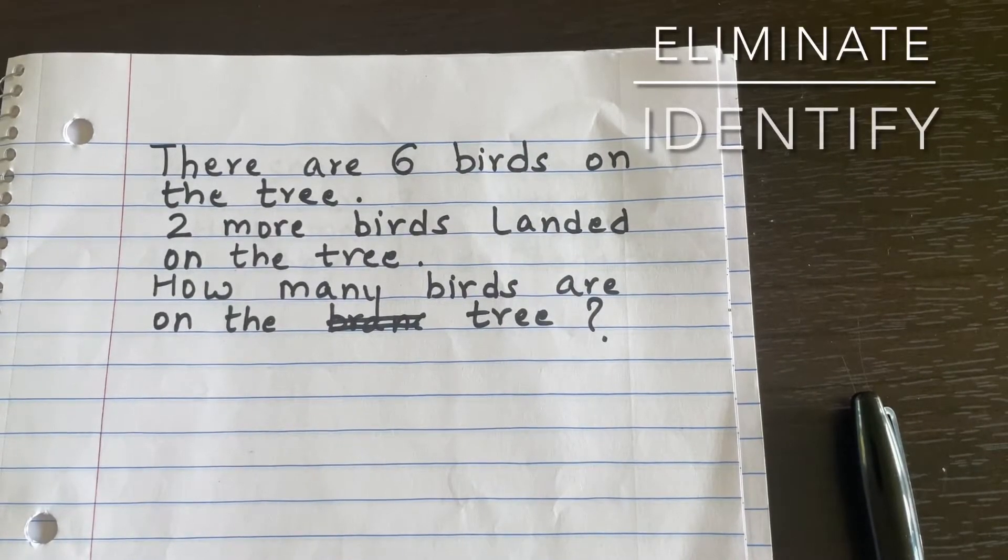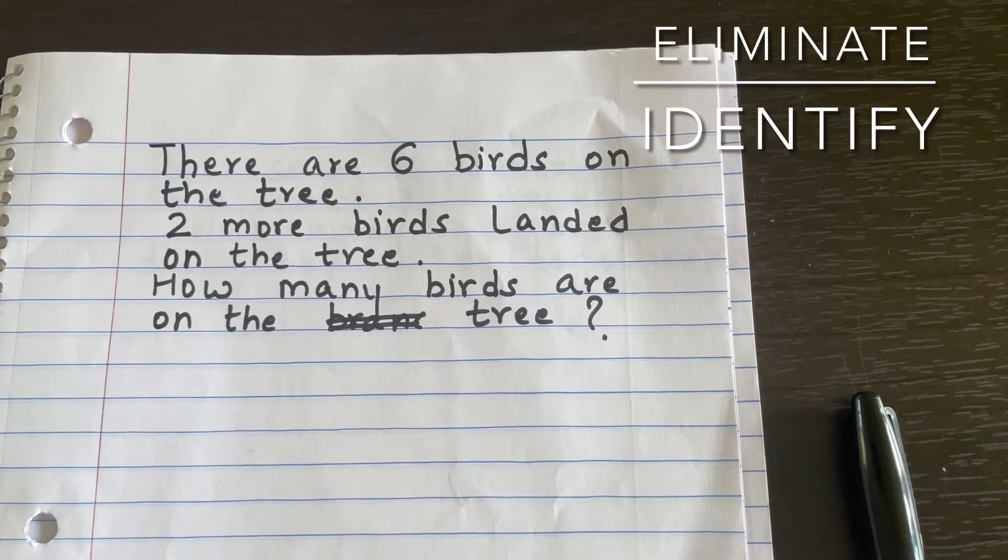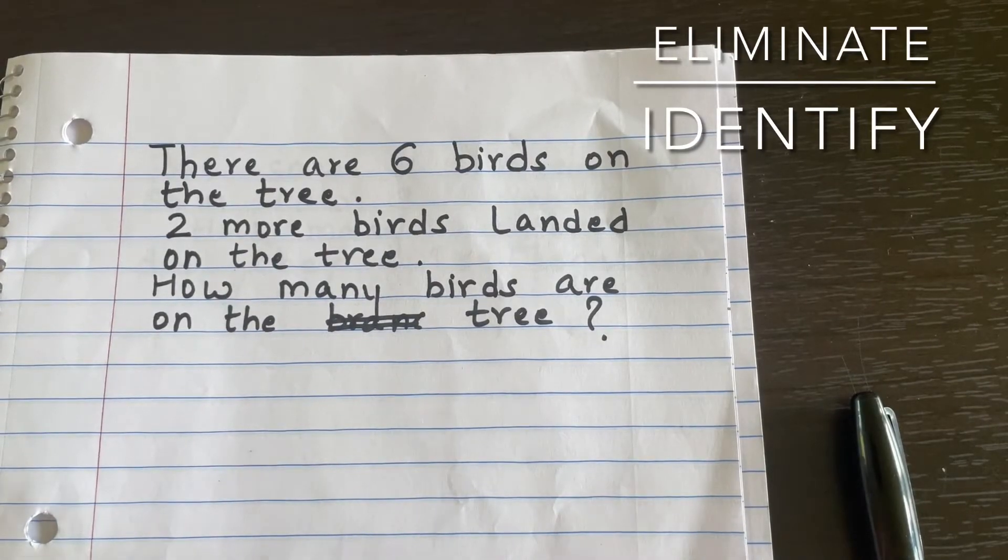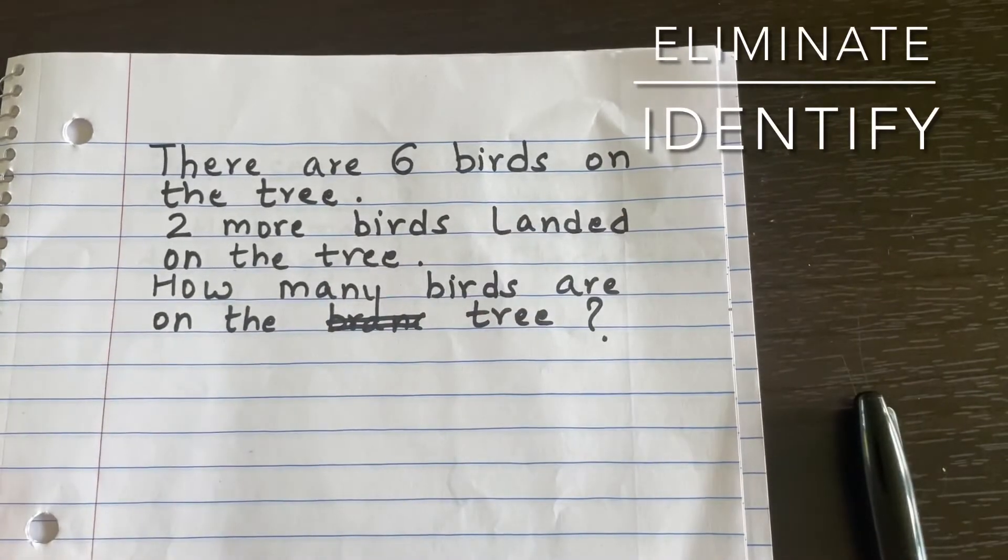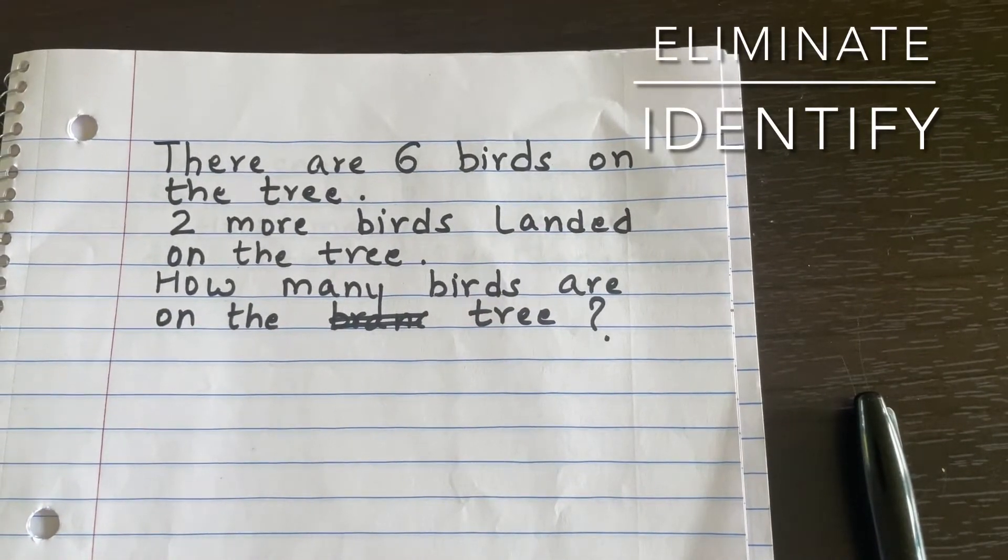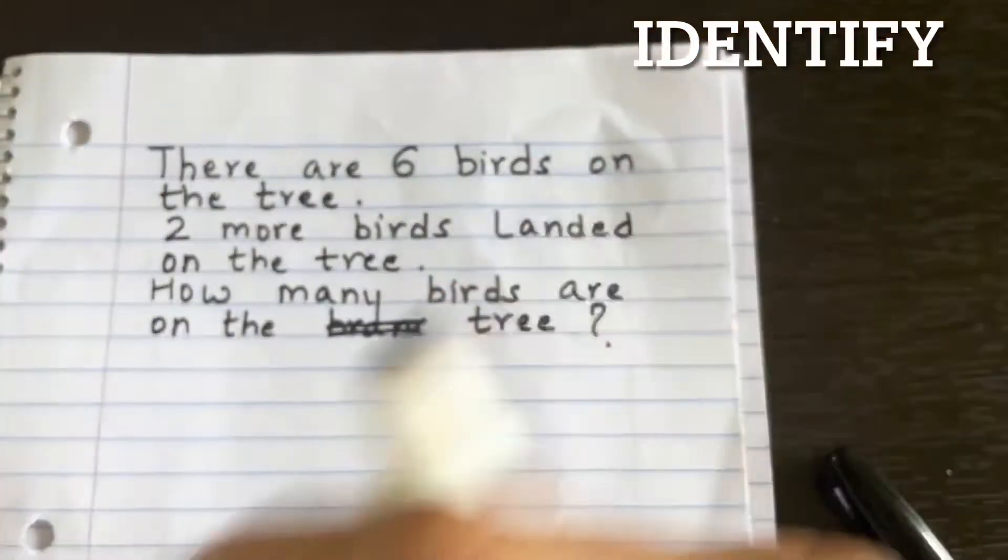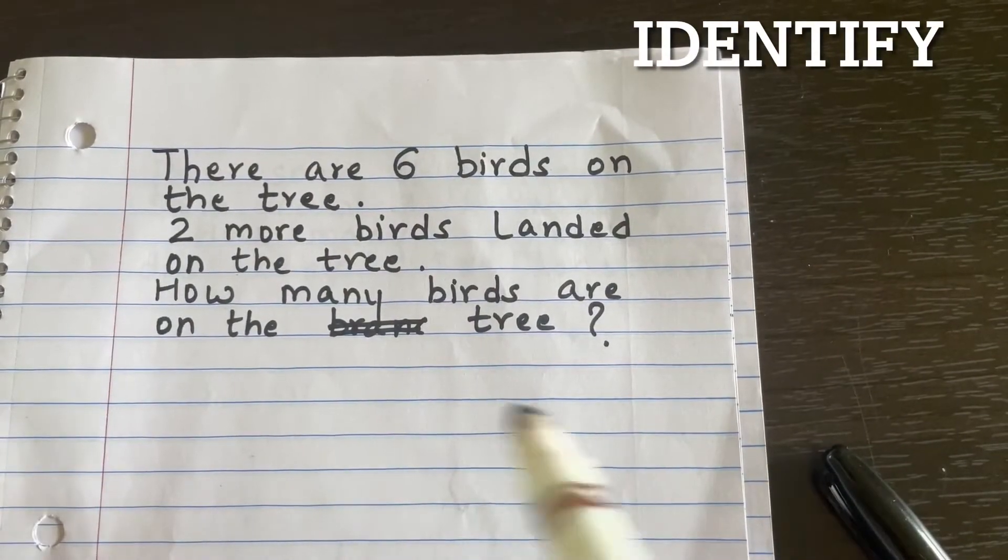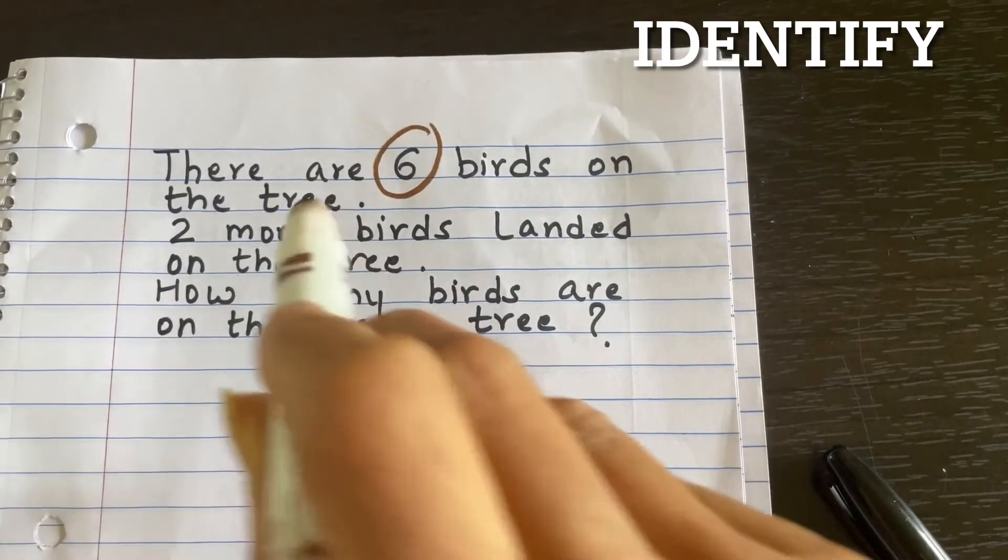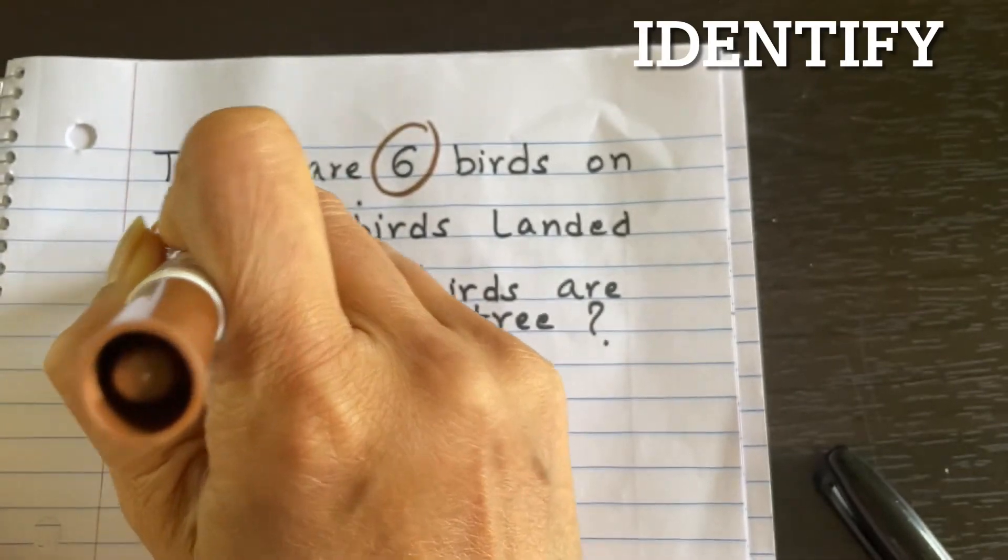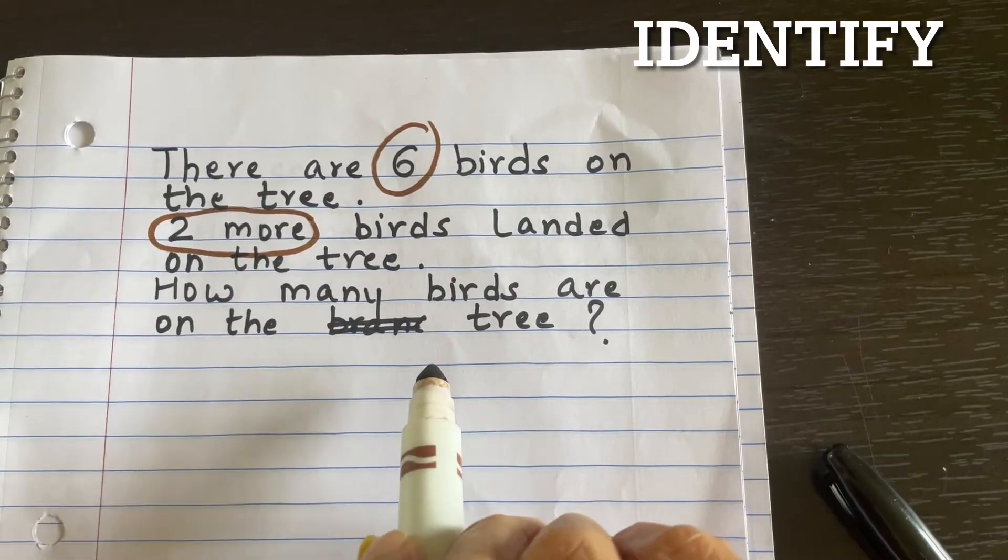We are going to use two steps to solve this problem. First is elimination and identification. What are we going to eliminate? We have a clutter of words here. We don't need all these words. It's always easy when we first identify the important ones. What are the important things here? We see six is a number, on the tree, two more - two more is important here, and how many birds are on the tree.